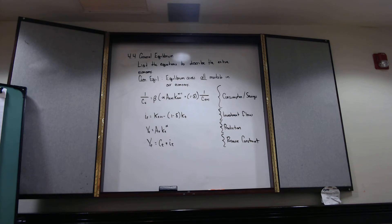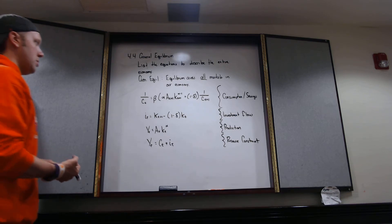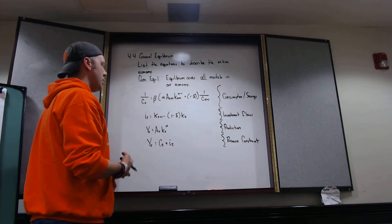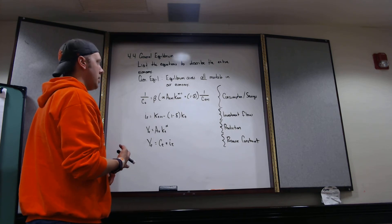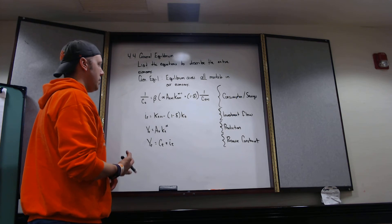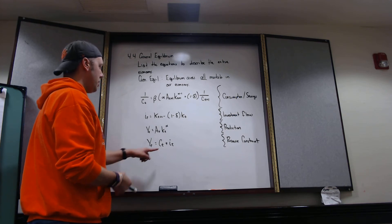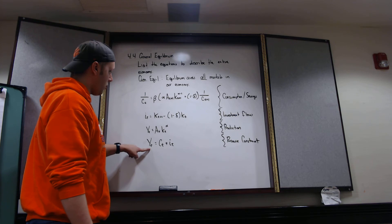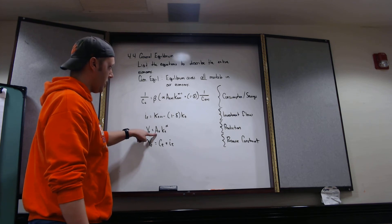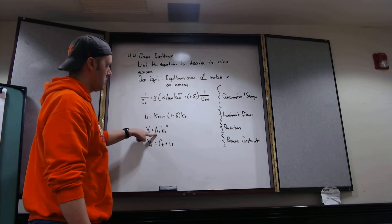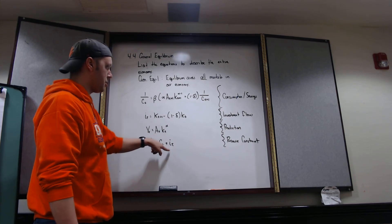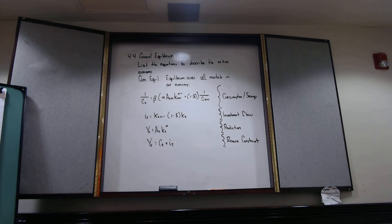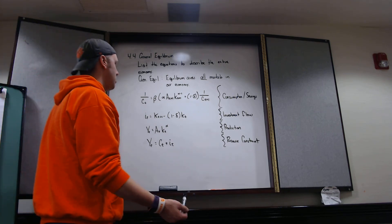So by determining what the flow of investment is and what the flow of consumption is, we're going to need to know what's actually being produced. And we're going to need to make sure that every single period, what we consume and what we invest is not going to exceed what's being produced. So before in the Solow model, I said output split between consumption and investment. A better way to think of it is that the sum of consumption and investment can never exceed production.